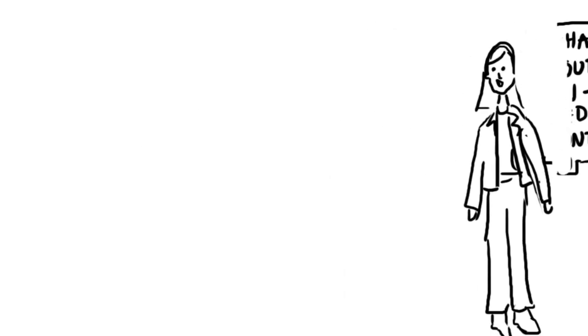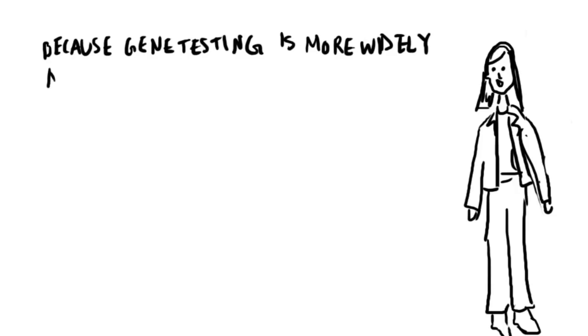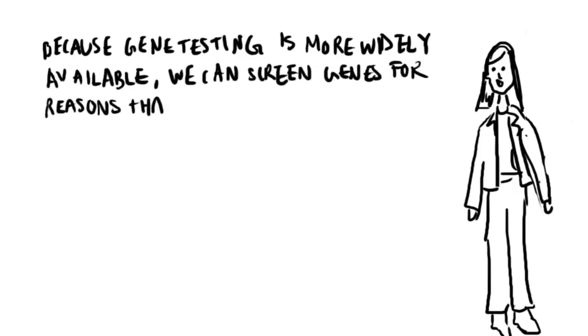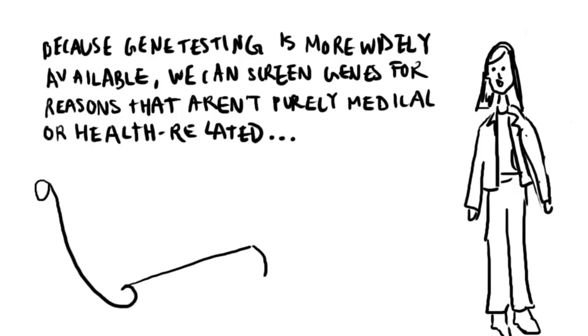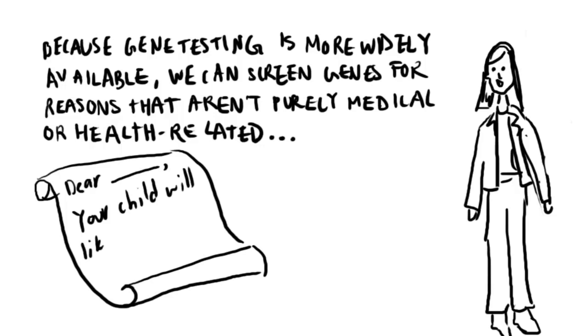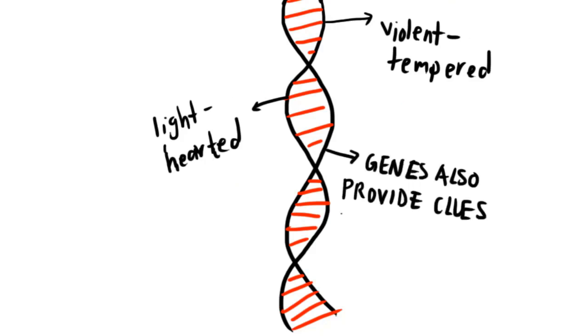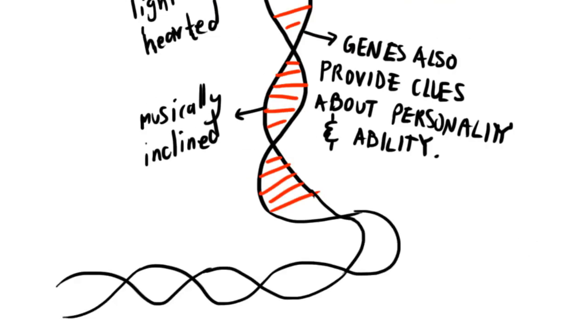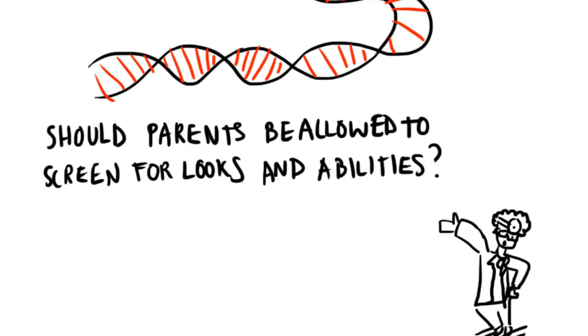Because gene sequencing is becoming a less costly, more readily available technology, the possibility arises of screening genes for questions that aren't purely medical or health-related. Among the genes that are phenotypically expressed are those that code for traits of appearance, like hair color or eye color. A person's gene sequence can also provide clues about their personality or abilities. Should parents be allowed to screen for looks and abilities as well?